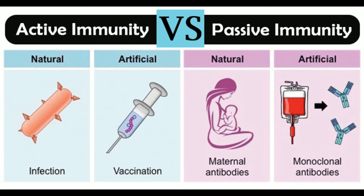Innate immunity is the first line of defense in the human body. It is a natural, born-with, or genetic immune defense mechanism. Innate immunity can be either external defense or internal defense.